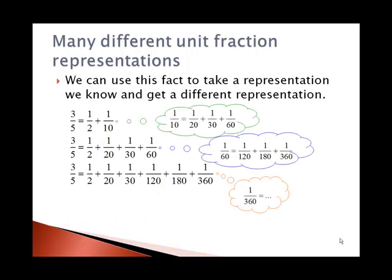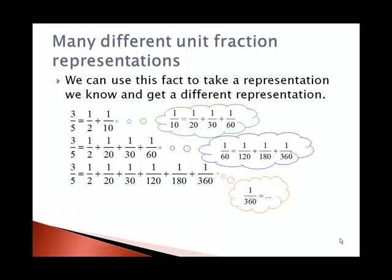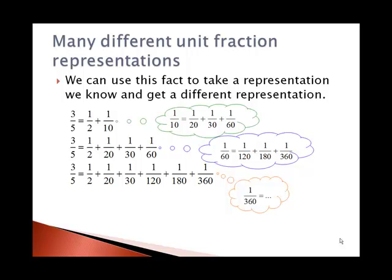So here, if we take this representation for 3/5, 1/2 plus 1/10, and we use the fact that 1/10 is 1/20 plus 1/30 plus 1/60, again using that initial idea and dividing both sides by 10. We can replace the 1/10 and get 3/5 equals 1/2 plus 1/20 plus 1/30 plus 1/60. And now we can repeat the process by getting 1/60 is equal to 1/120 plus 1/180 plus 1/360.